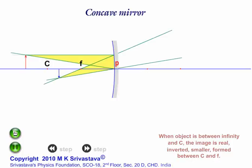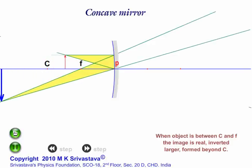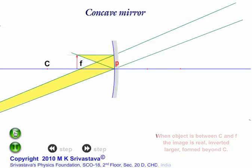When the object comes to the center of curvature, its image is also formed at the center of curvature, and the image is real, inverted, of the same size as the object. When the object is between C and F, its image is larger than the object, real, inverted, and formed beyond C.